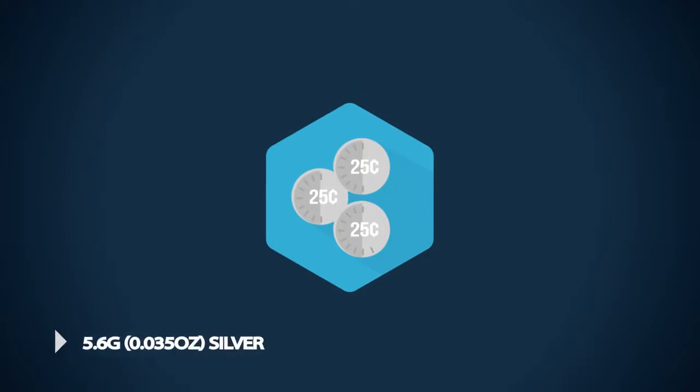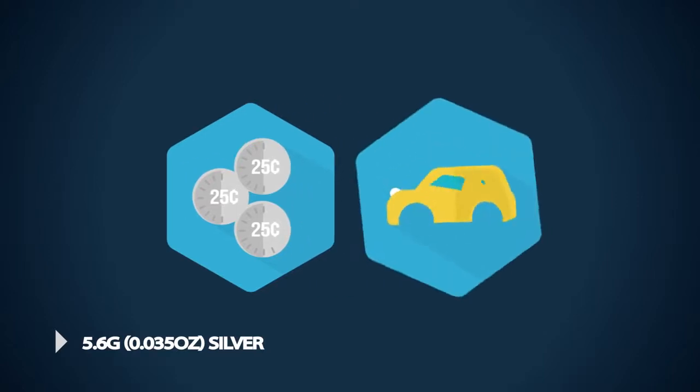Up until the 1960s, a U.S. quarter contained 5.6 grams, 0.035 ounces of silver, and would buy you a gallon of gasoline.